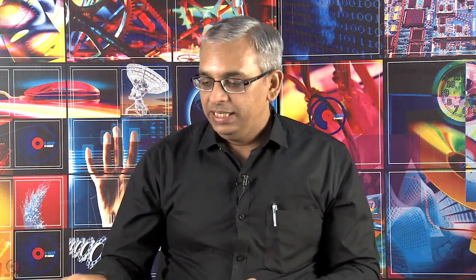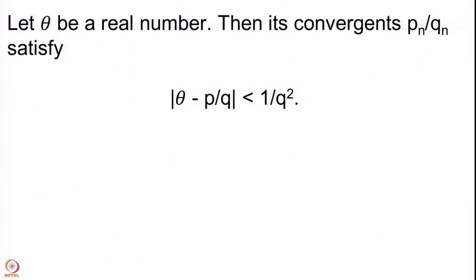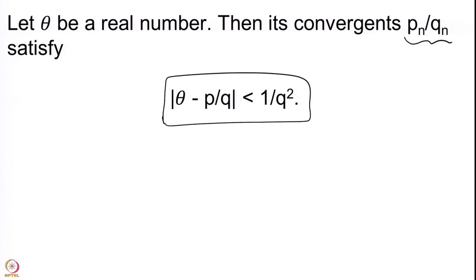We have proved that whenever theta is a real number and we take the continued fraction expansion for theta, and P_n upon Q_n denotes the convergents, then these convergents satisfy this inequality. The convergents give you a good approximation for theta.